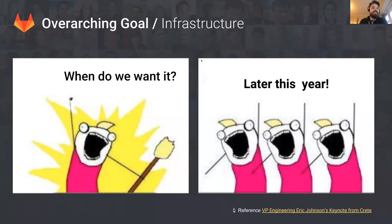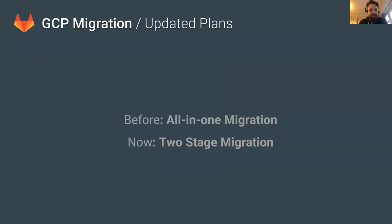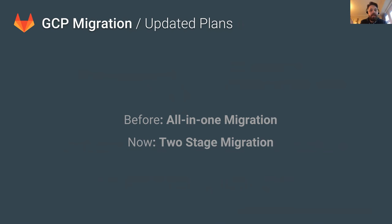Let's discuss the GCP migration in a little bit more detail. The plan had previously been to migrate directly from Omnibus running in Azure to Kubernetes in the Google Cloud Platform. However, due to some factors external to the project, we found that we needed to complete the GCP into cloud migration earlier than we'd planned. This meant there were changes needed to make GitLab run in Kubernetes that could not be done within this timeframe.